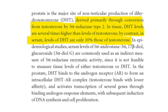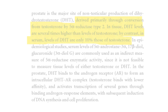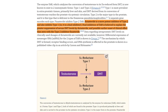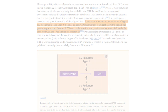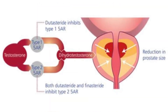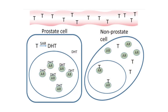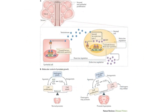Therefore, serum measurements can underestimate the drug's efficacy in tissues where DHT reduction is crucial for therapeutic outcomes. For example, in treating conditions like prostate enlargement or androgenetic alopecia, the critical factor is the extent of DHT inhibition within the prostate or the scalp respectively, rather than in the bloodstream. This localized reduction in DHT can lead to desired effects such as decreased prostate size or slowed hair loss, even if serum levels of DHT show only modest decreases.